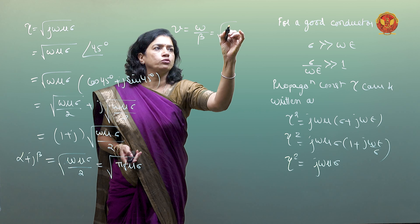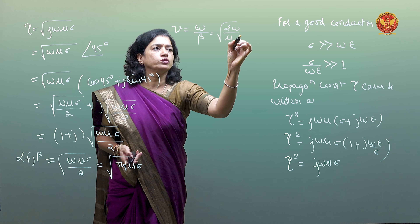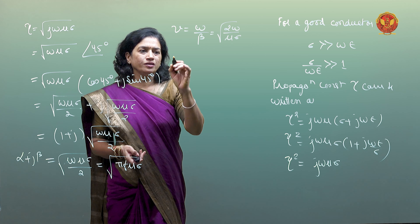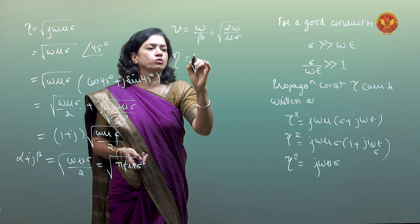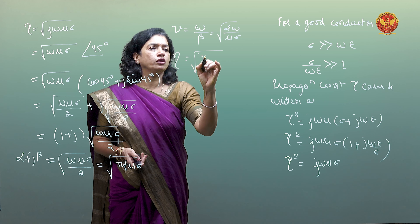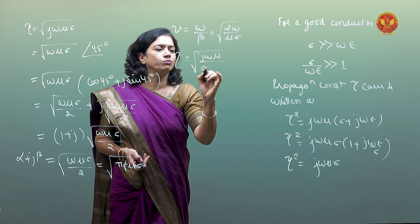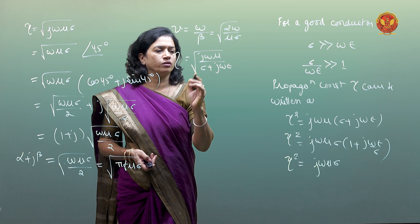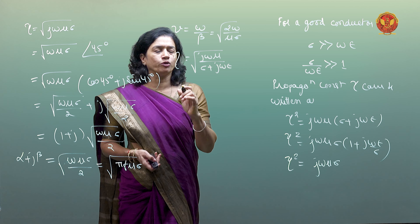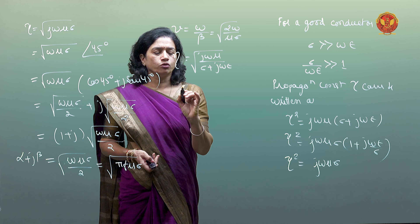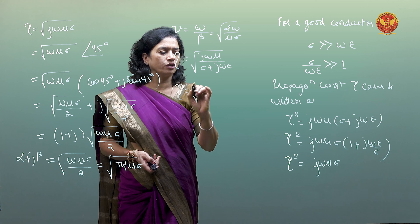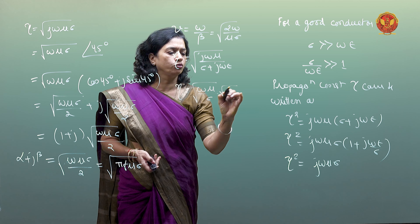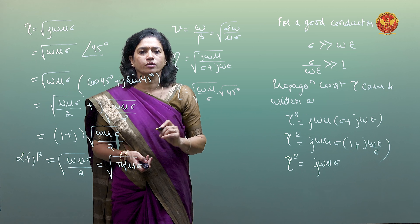The final expression for intrinsic impedance: starting from under root (j omega mu upon sigma plus j omega epsilon), and simplifying, the final intrinsic impedance is under root (omega mu upon sigma) at an angle of 45 degrees. This term, under root (2 omega upon mu sigma), is also derived.